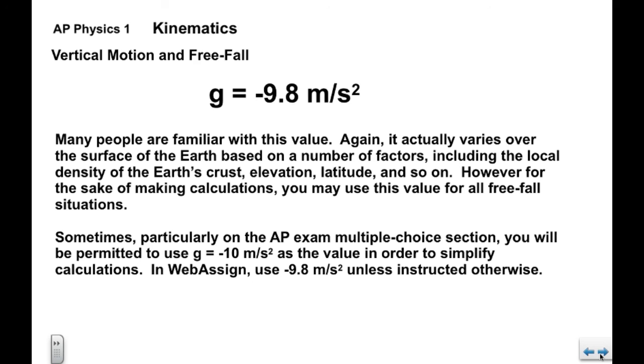At times, particularly on the AP exam multiple choice section, you'll be permitted to use lowercase g equals negative 10 meters per second squared in order to simplify your calculations. However, when you're doing your homework in WebAssign, you always want to use negative 9.8 unless otherwise told.